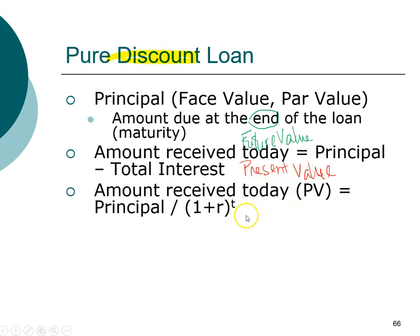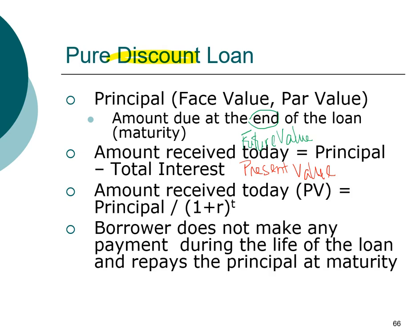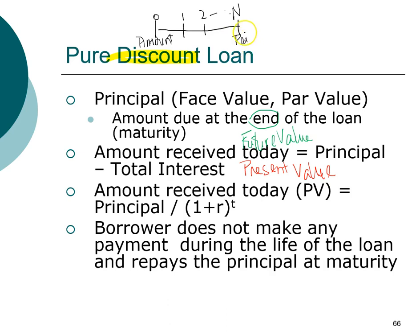To find the amount you receive today, we compute the present value using the formula we've seen before, or you can use the financial calculator. Another important feature of the pure discount loan is that the borrower does not make any payment during the life of the loan, but rather repays the entire amount at maturity. So on the timeline, you receive the present value today and pay back the principal — the face value — at the end of the loan term.